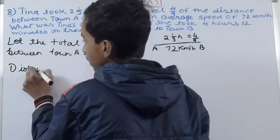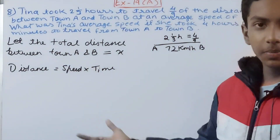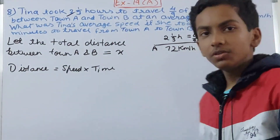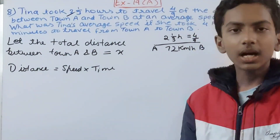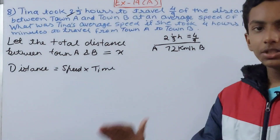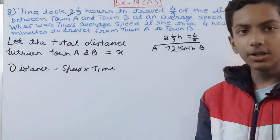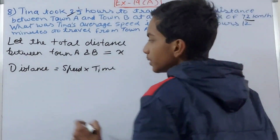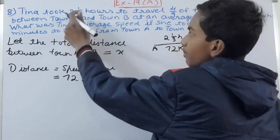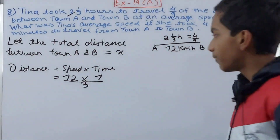We know that distance equals speed into time. The speed is 72 kilometers per hour and the time taken was 2 and 1/3 hours. So we can calculate the distance she traveled. Distance = 72 × 2 and 1/3. Convert the mixed fraction to an improper fraction: 2 × 3 + 1 = 7, so it becomes 7/3.